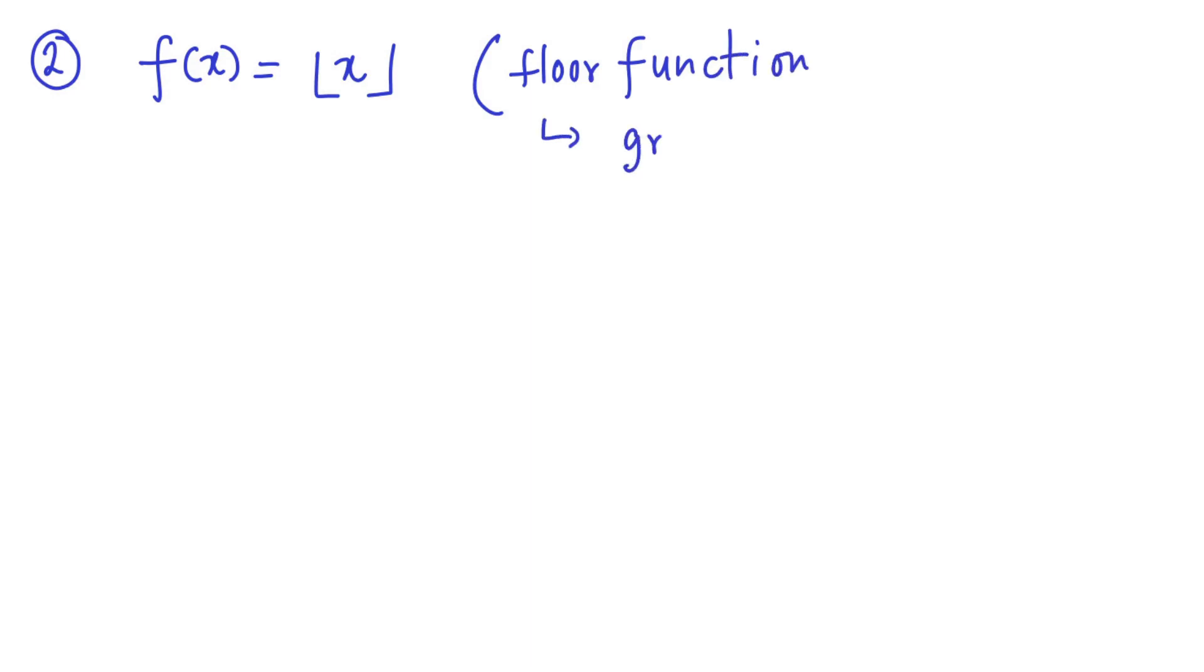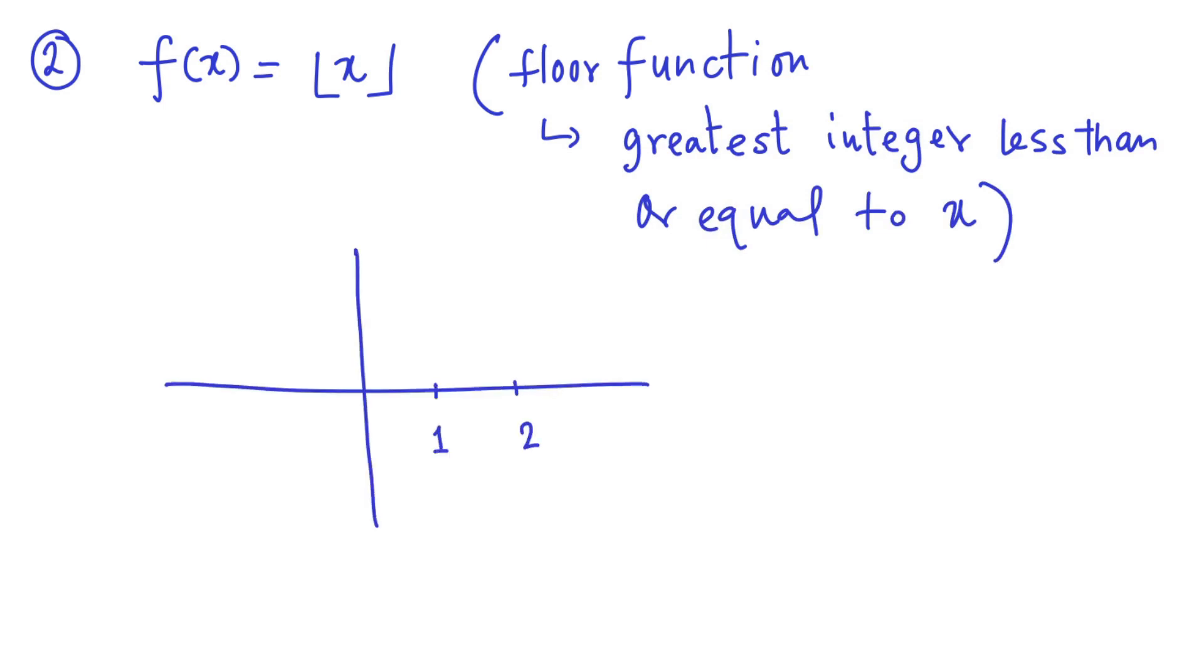Let us now consider the so-called floor function. Floor function is the greatest integer less than or equal to X. So we can actually plot the floor function as you see it here, that between 0 and 1, the function will take value 0, excluding the point 1. So the open circle means the point is not included. On the closed shaded circle means the point is included. So as you can see that, consider the point 1, then the left-hand limit of the floor function is 0. On the other hand, the right-hand limit of the floor function at X equal to 1 plus is 1. Therefore, at X equal to 1, the limit of the floor function does not exist.